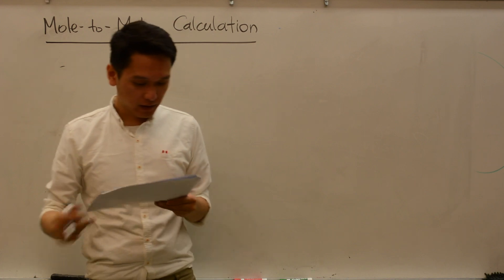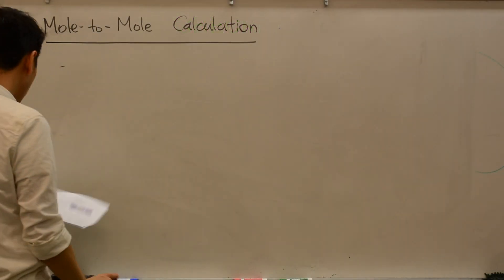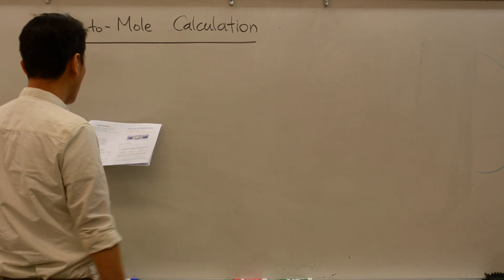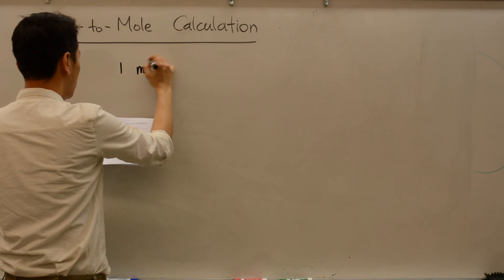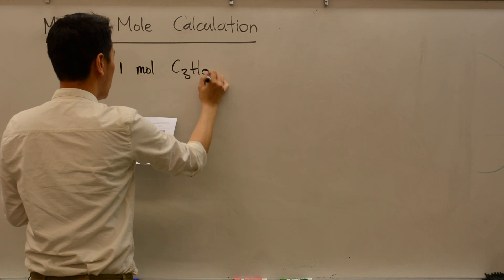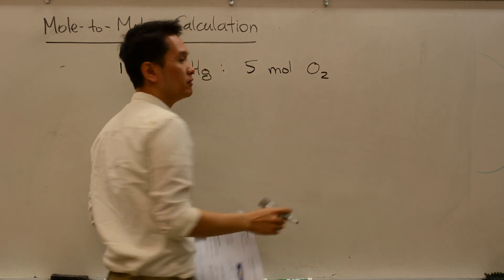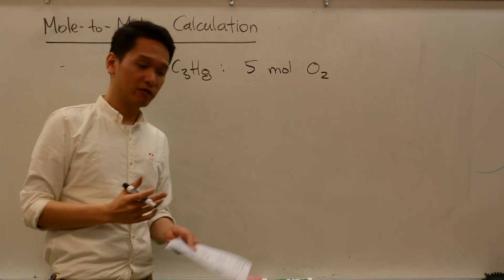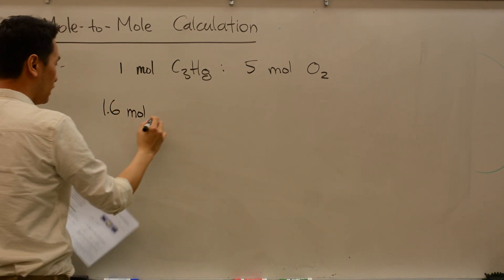Let's do a checkpoint question. Propane fuel, C3H8, is used in barbecues. How many moles of oxygen gas are needed to react with 1.6 moles of propane gas? We know the relationship between propane gas and oxygen: for every 1 mole of C3H8, you need 5 moles of oxygen. That's our equality — our conversion factor. We are given 1.6 moles of propane gas.